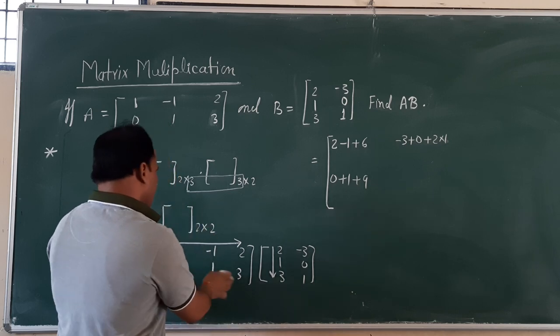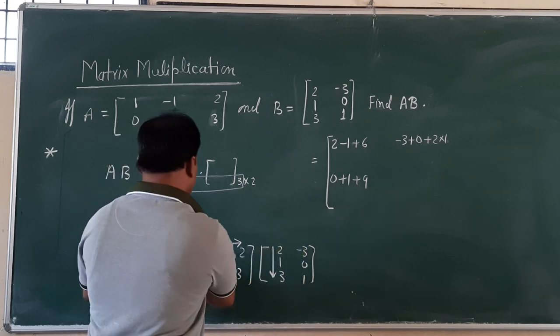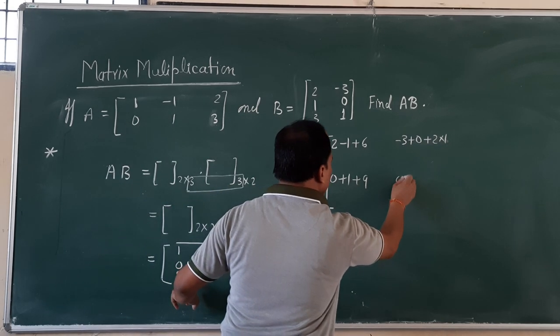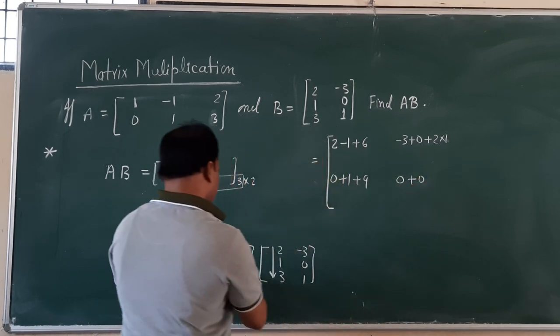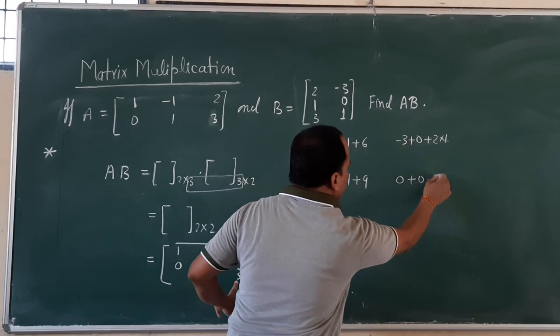And this row is going to multiply with second column. 0 multiplied by minus 3 gives you 0. 1 multiplied by 0 gives you 0. 3 multiplied by 1 gives you 3.